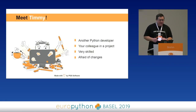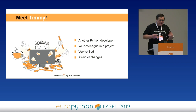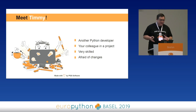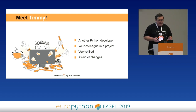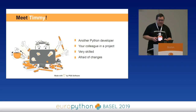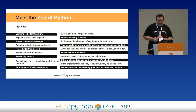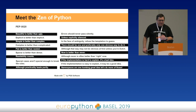Let's meet another friend — meet Timmy. Timmy is the average Python developer. Probably all of you know Timmy if you've worked in a Python project. Timmy is very skilled, has some experience — a couple of years — and he has his own style of coding Python, which might be in some ways unorthodox. Some people say Timmy is mean and they don't like Timmy, but the truth is that Timmy is afraid of changes. That's why he doesn't like if you come and say, 'Oh, we're going to measure the quality of our code.' The third friend is the Zen of Python — you all probably know this.